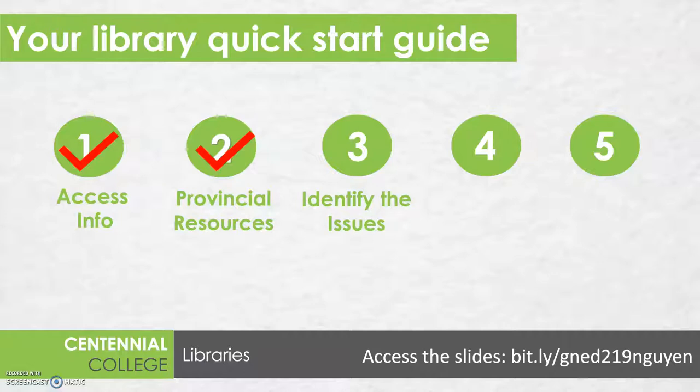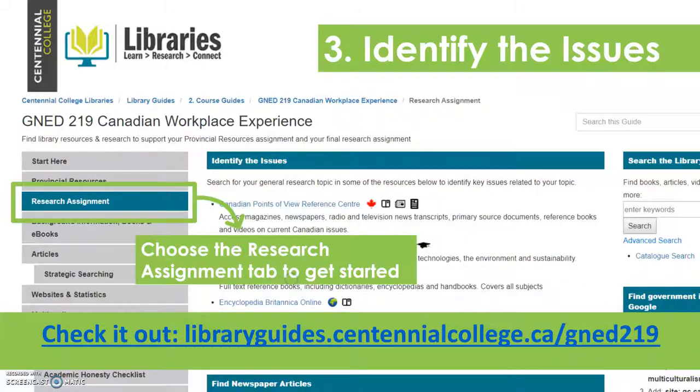For your research paper you're going to choose a general topic to discuss from the list provided by your professor, and once you've chosen a general topic you'll need to identify some issues related to that topic that will become the subtopics for your research paper. So to help you identify the issues or subtopics you'll discuss in your paper, we're going to head to the GenEdge 219 library guide.